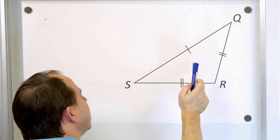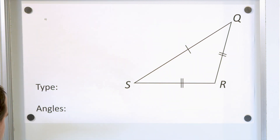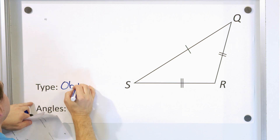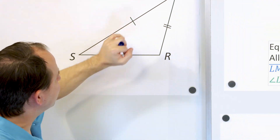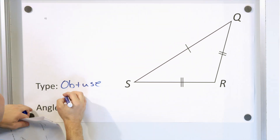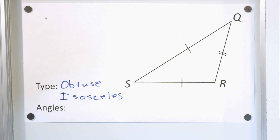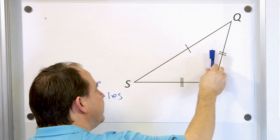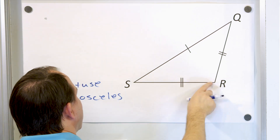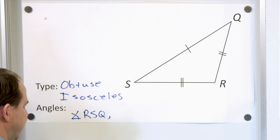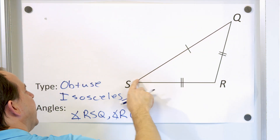Problem six: we see one angle that's obtuse — larger than 90 degrees — making it an obtuse triangle. But we can also see that two of the sides are equal while the third is different, making it an isosceles triangle. So it's an obtuse isosceles triangle. The question asks us to name the angles that measure less than 90 degrees. Those are angle RSQ and angle RQS.